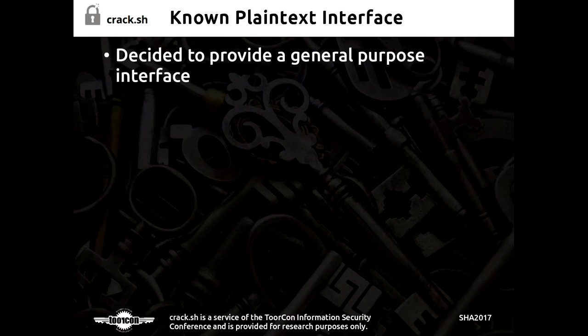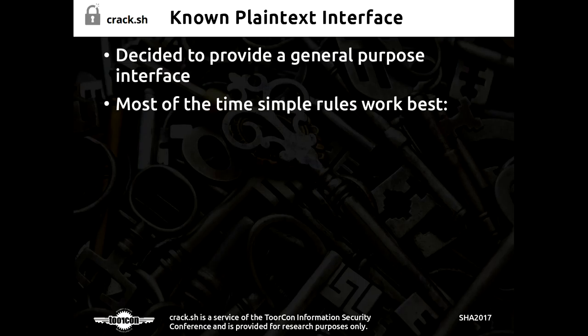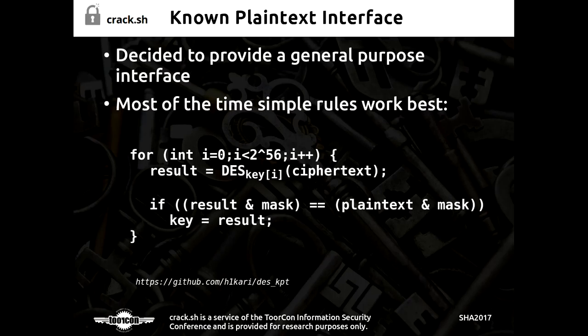We wanted to make it so any weird protocol could use the service — lots of radio protocols and satellite protocols still use DES. So we created a general-purpose interface where you provide the parts of the plaintext you know and parts of the cipher text, run it through the FPGAs, and get back a list of all possible keys that meet that criteria for further checking in software. It's basically: do the DES operation, apply a mask, do a compare. All this is up on GitHub.